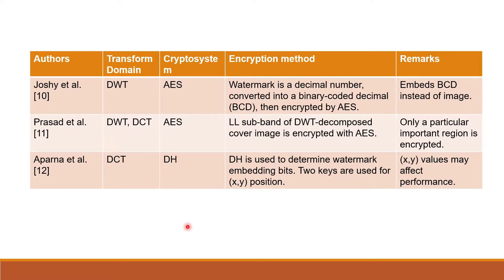Next is by Tiwari et al., applying DWT and DES. The image is split into 8 by 8 blocks before being encrypted with DES. This is inefficient due to the block size limitation of DES — recall that DES only encrypts blocks of 64 bits. Next, Joshi et al. applied DWT and AES. Their watermark is a decimal number which is converted into a Binary Coded Decimal (BCD) before being encrypted by AES. Instead of embedding an image, they embedded a BCD, which is an interesting take on the watermarking process.